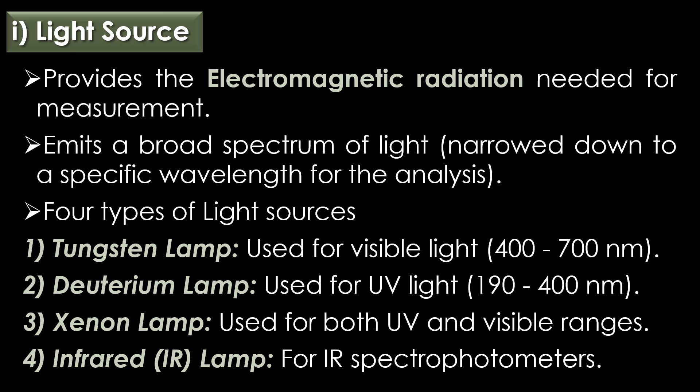Light source: the light source provides the electromagnetic radiation needed for measurement. It emits a broad spectrum of light which is narrowed down to a specific wavelength for analysis. Four types of light sources are available: tungsten lamp, deuterium lamp, xenon lamp, and infrared lamp. The deuterium lamp is used for ultraviolet light from 190 to 400 nanometers, the xenon lamp is used for both UV and visible ranges, and the infrared lamp is used for infrared spectrophotometers.